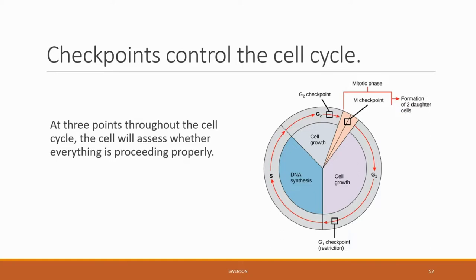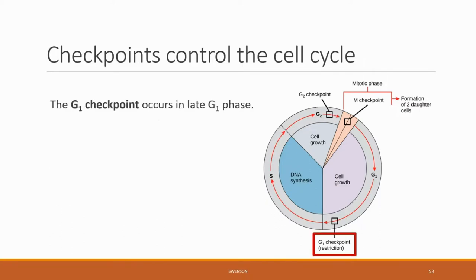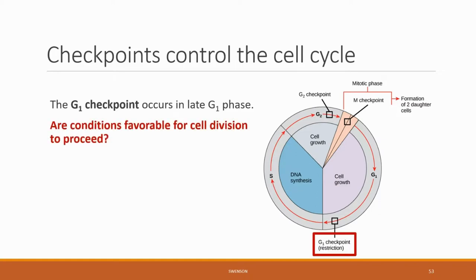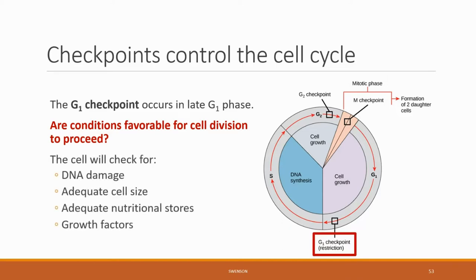That covers the cell phases. Now let's talk about how cells control the different cell cycles. To ensure that the cell is completing its tasks properly before it goes on to the next step, a series of checkpoints control the cell cycle. The G1 checkpoint occurs in late G1 phase — the cell is looking to see if conditions are favorable for cell division to proceed. The cell will check for DNA damage, adequate cell size, adequate nutritional stores, and growth factors.